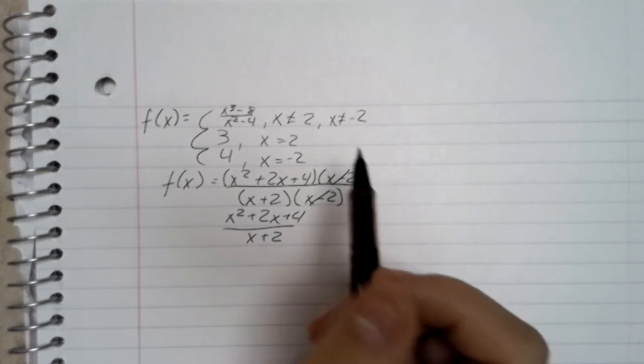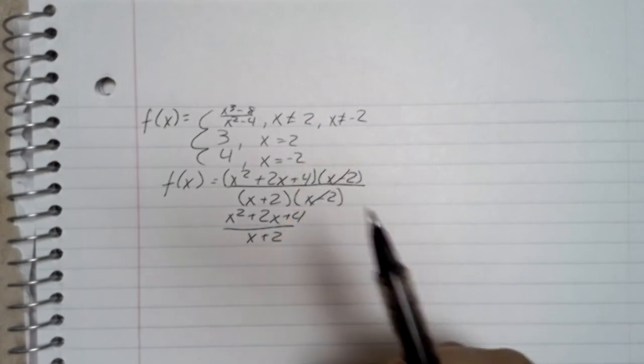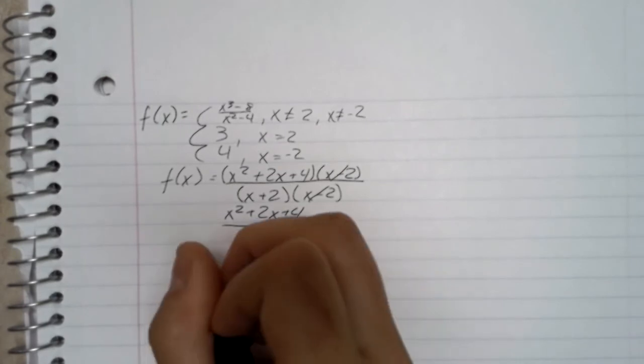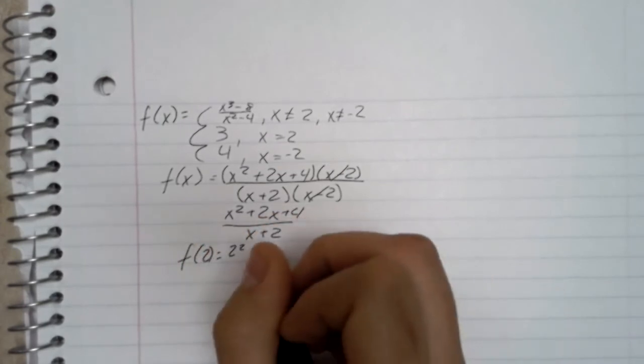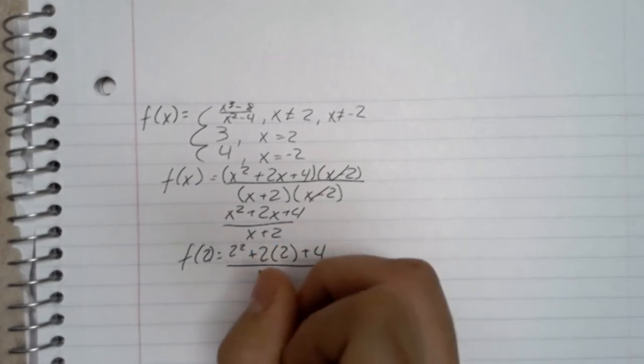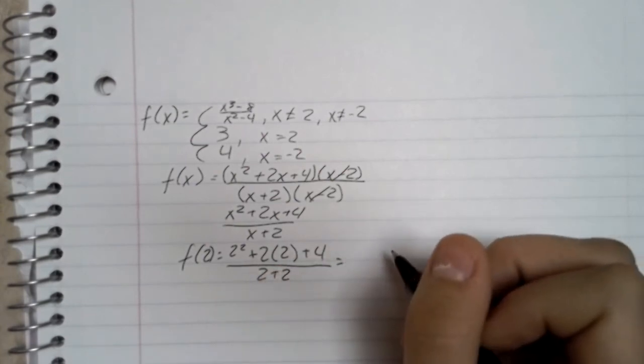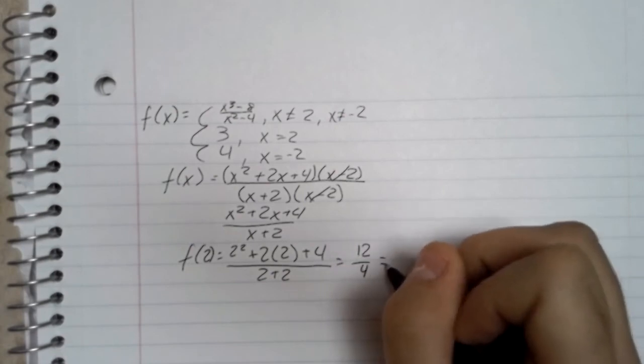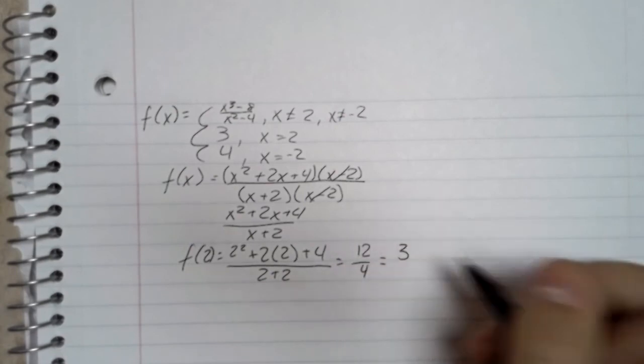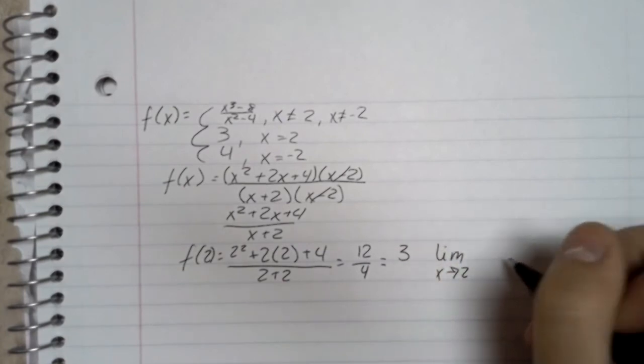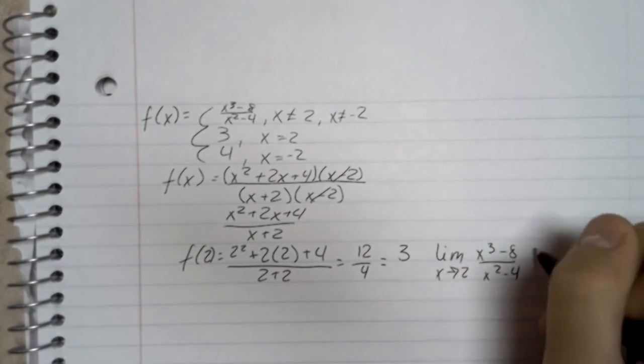And then the first one I plugged in was the 2. So then it was 2 squared plus 2 times 2 plus 4 over 2 plus 2, and then that gives you this 12 over 4 and that comes out to 3.